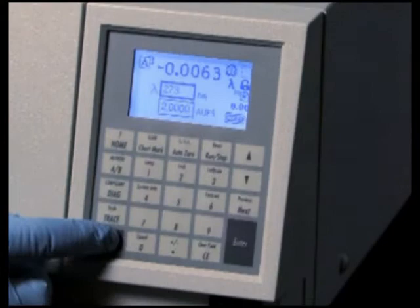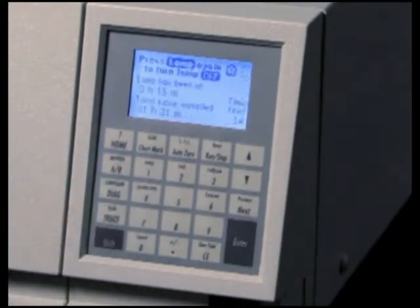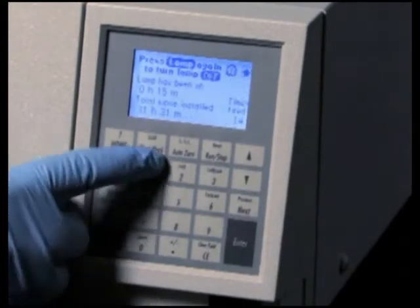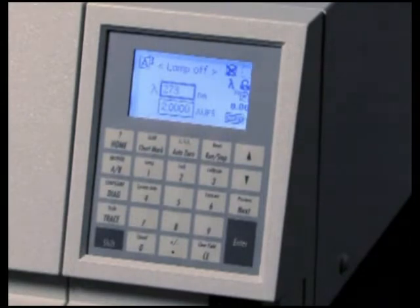Extinguish the lamp using the keypad by pressing SHIFT Lamp and then pressing SHIFT Lamp again. Allow the lamp to cool for a minimum of 30 minutes. Turning the lamp off in this manner allows the instrument fan to blow cool air on the hot lamp, causing it to cool faster.